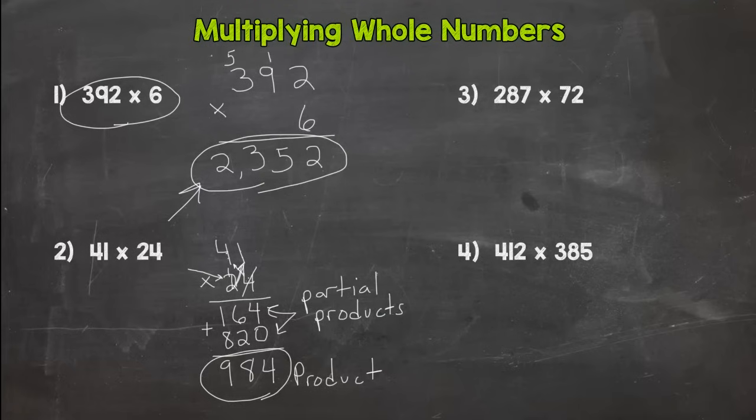I am going to show you what not to do. You do not do 4 times 1 is 4 and then 2 times 4 is 8, answer 84. This would be incorrect.